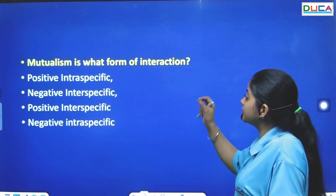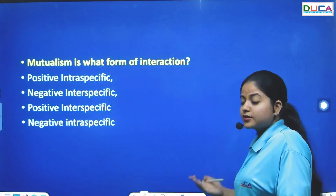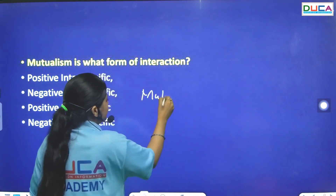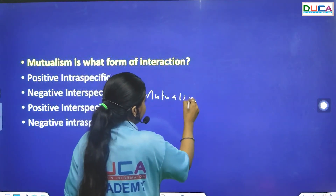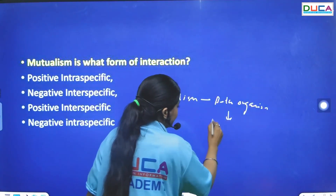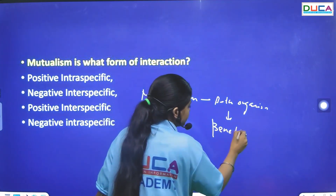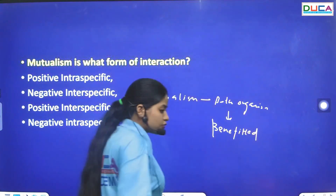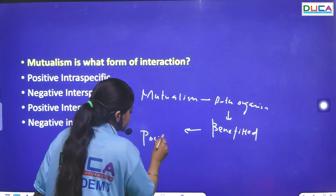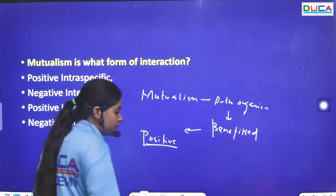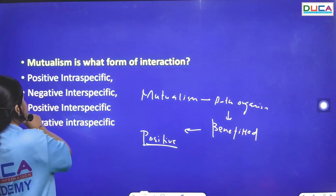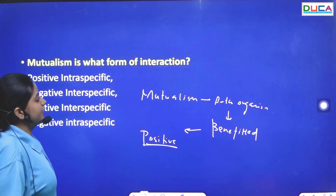The next question: What form of interaction is mutualism? In mutualism, both organisms are benefited. Since both are benefited, it is a positive interspecific interaction.